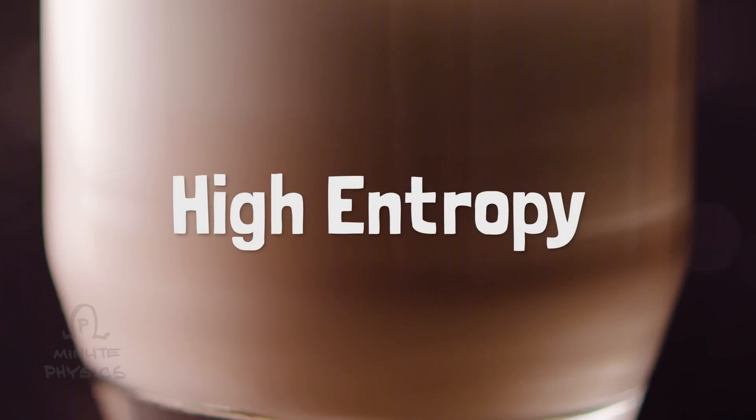Continuing on, entropy keeps going up until the milk and coffee are completely mixed together, and swapping any molecules of coffee and milk with any others doesn't really make any difference at all. That's equilibrium, where there are huge numbers of arrangements of the molecules that look essentially the same. But this highly mixed equilibrium is once again simple. It's just a homogeneous mixture of coffee and milk, no more complicated fractal swirly stuff.